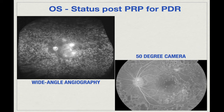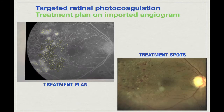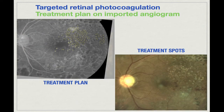We clearly see some areas of non-perfusion and some neovascularization. We basically targeted all these areas of non-perfusion and delivered laser only there. This is an eye that had received very heavy PRP, so we need to be careful about how much more we photocoagulate, because we want to preserve remaining retinal tissue. This is a post-treatment image. The other eye: on the left, the treatment plan targets the area of non-perfusion and neovascularization superiorly, and this is what it looks like after photocoagulation.